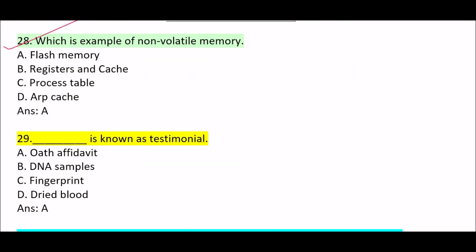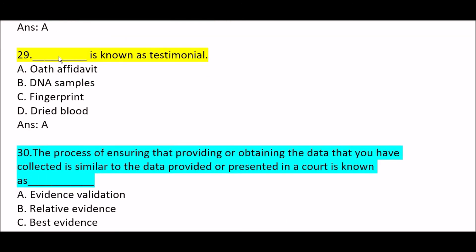Next question: which is an example of non-volatile memory? Correct answer is Option A — flash memory. Flash memory is an example of non-volatile memory. Next question: [blank] is known as testimonial. Correct answer is Option A — oath/affidavit. Oath and affidavit are known as testimonial.